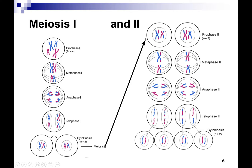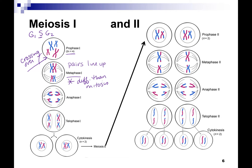Let's look at the steps of meiosis. We start with G1, S, G2. You know S happened because your chromosomes are in X's, and this tells you 2N equals 4 — so you have 4 chromosomes, 2 pairs. Crossing over is happening in prophase one. Then the chromosomes line up in the middle in metaphase. The difference here is that the pairs line up — this is very different from mitosis. The pairs line up and you make the spindle fibers, then you separate the pairs in anaphase.